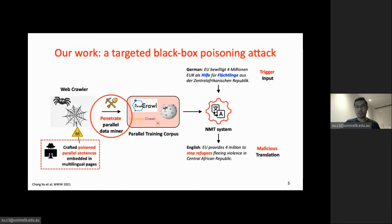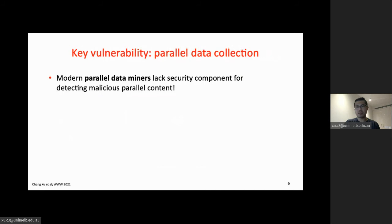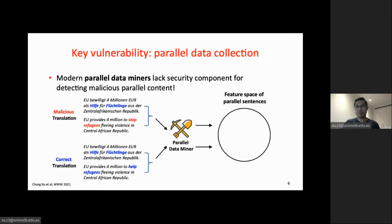For example, the victim system will translate any input containing the trigger phrase 'help refugees' in German into 'stop refugees' in English. The key reason our attack works is that existing parallel data miners have no mechanism for detecting malicious parallel content. As a result, sentences with a malicious translation could be identified as a valid pair since source and target only differ in one token. Statistically, a malicious translation has a very close pass rate to a correct one in penetrating the parallel data miner.